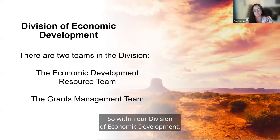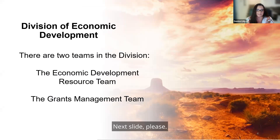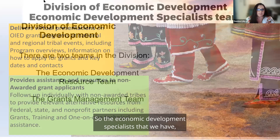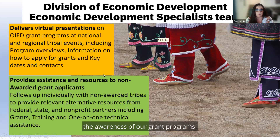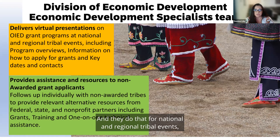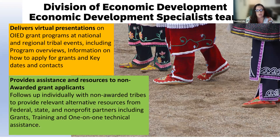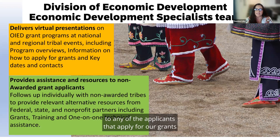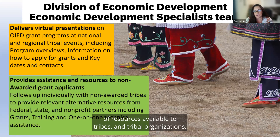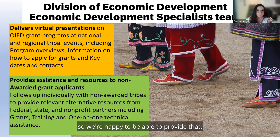Our goal is to support the economic development of American Indian and Alaska Native communities through offering access to capital through our grant opportunities and loan guarantees. We also offer technical assistance to federally recognized AI and AN tribes. We have two divisions in our office — the Division of Capital Investment and the Division of Economic Development. Within our Division of Economic Development, we have two teams, each covering something specifically different.